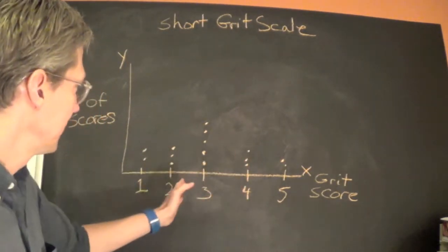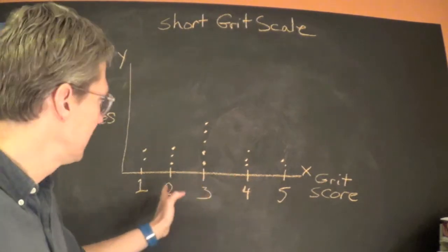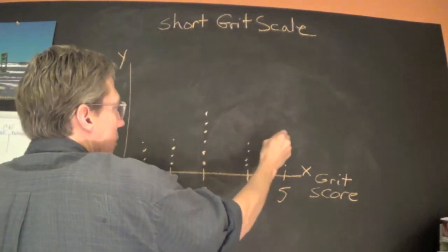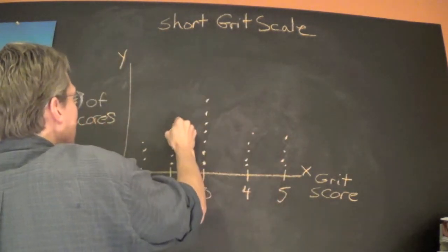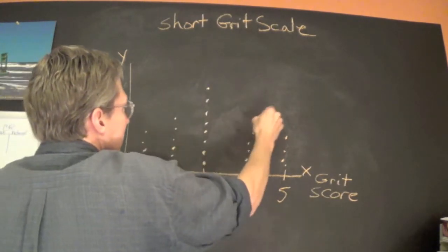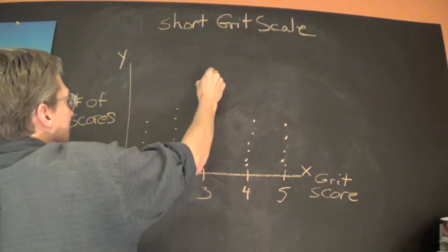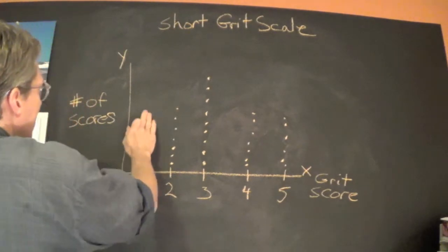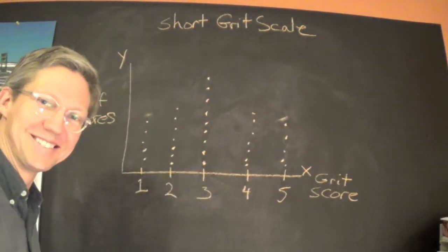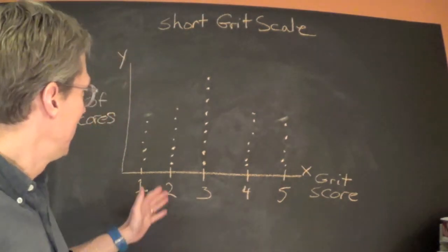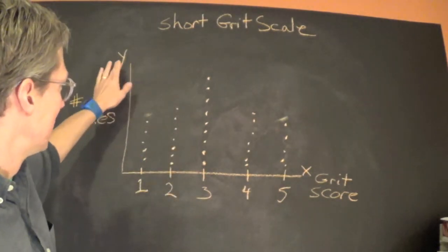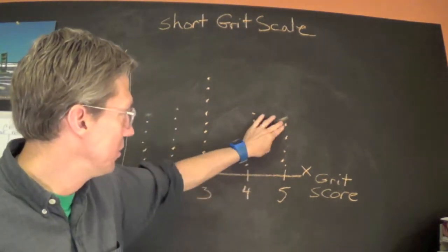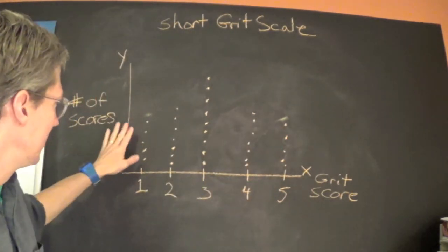It is possible with the grit scale that we would have a 2.5 or a 3-point-something score, but just to keep it simple I'm going to plot it as such. So we go through the entire sample — we've got a really large sample with a lot of data points. So what we've done is plotted them. These are our number of scores: we had this many people score a 3, this many people score a 5, and this many score a 1, and so forth.